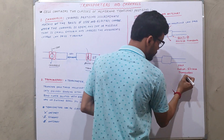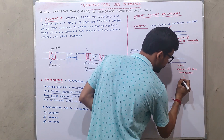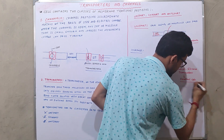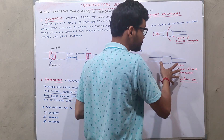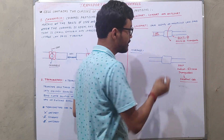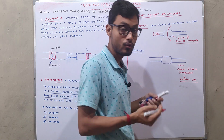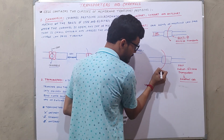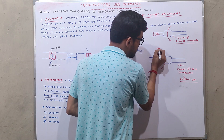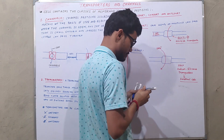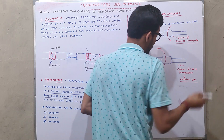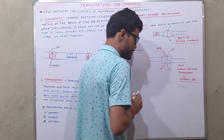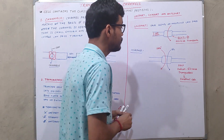Sodium-glucose transporters, or SGLT, are situated on intestinal cells. The function of SGLT is to provide transportation of sodium and glucose molecules from one side of the cell to another. Specifically, SGLT facilitates two sodium ions and one molecule of glucose from outside of the cell to the inside of the cell. So two different kinds of molecules pass from one side of the cell to another.